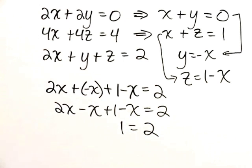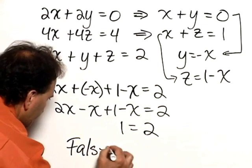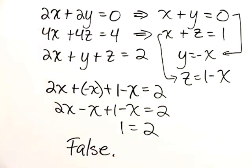Now, sometimes that may mean you've made an error, but I've done my math correctly. 1 does not equal 2. This is a false statement. And that means this system of equations has no solution.